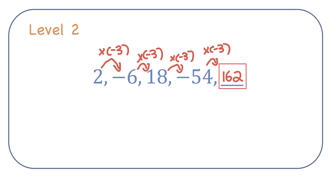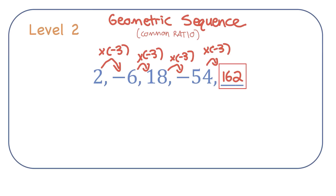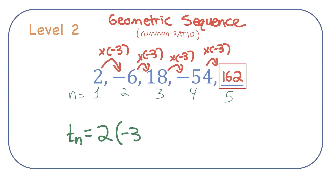This type of sequence where there is a common ratio between consecutive terms is called a geometric sequence. If I number the terms, to get the value of any term in this geometric sequence, I would just take my first term and multiply it by the common ratio, negative 3, n minus 1 times. If we tested that out by subbing in 5, we would get the answer of 162.